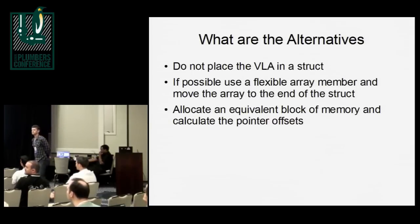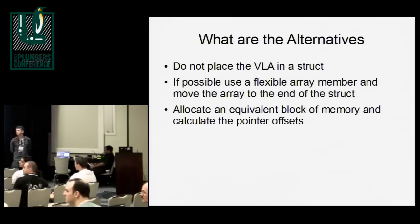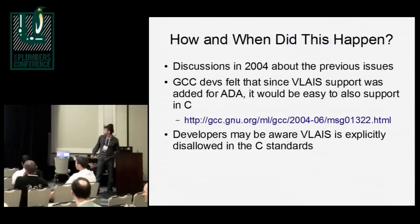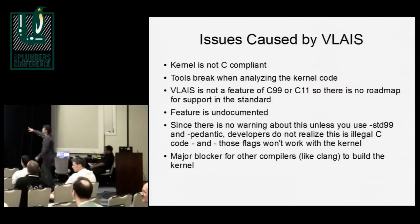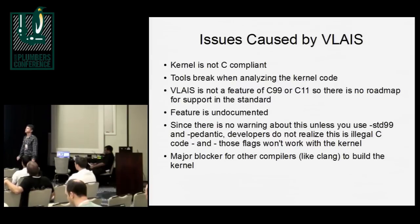Is there a GCC flag that could enable a warning specifically for usage of those arrays in structs? We could just enable that in the kernel build. There are flags, but it would break the kernel. He means just for VLACE specifically. Yeah, you could potentially add that.